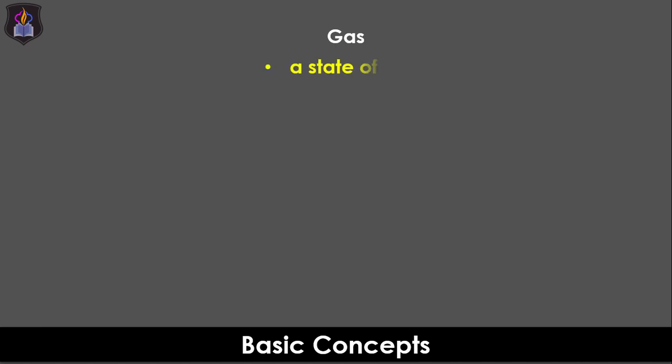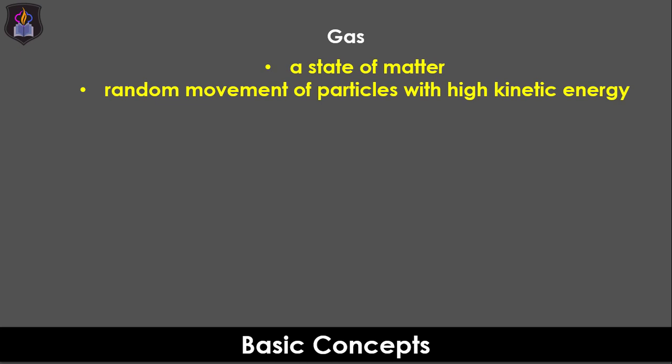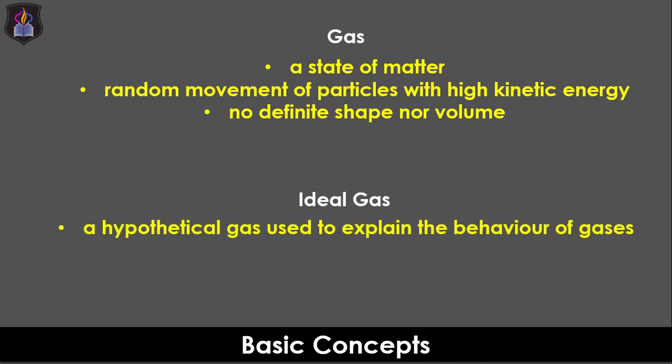A gas is one of the physical states of matter whose particles move randomly with high kinetic energy throughout the space it occupies. It has no definite shape nor volume and as such takes after the shape and volume of the containing vessel. An ideal gas is a hypothetical gas used to explain how gases ought to behave. It does not exist while a real gas, as the name implies, is real and does exist. All the gases you have heard about like oxygen, nitrogen, hydrogen are all real world gases.